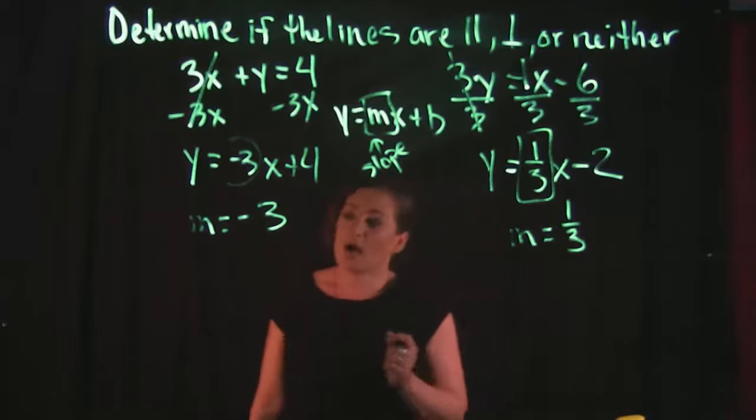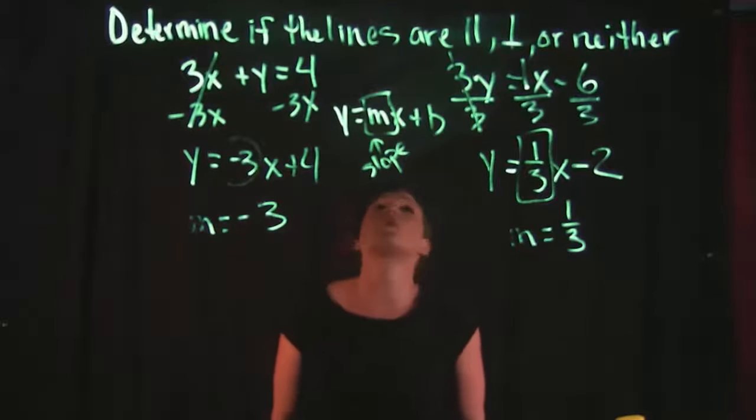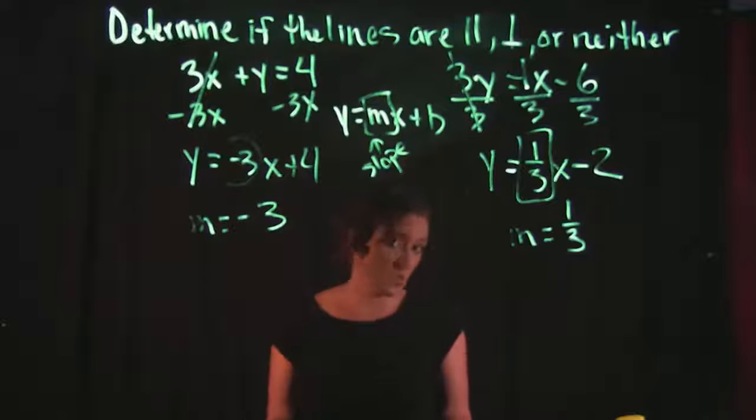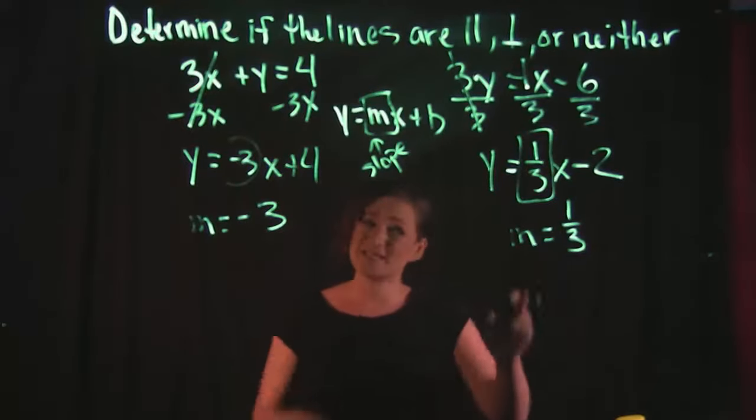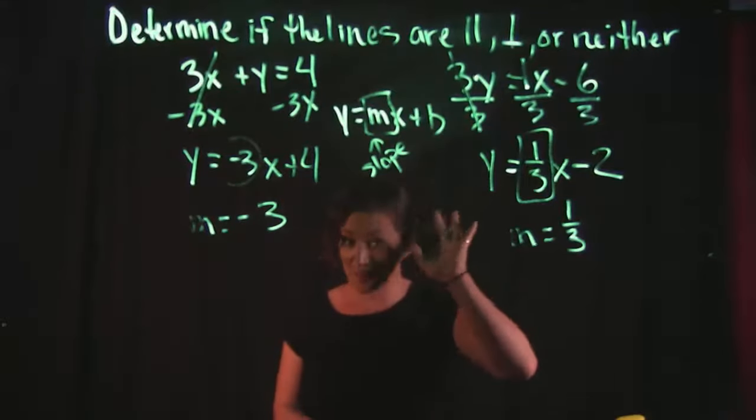So I have a slope of negative 3 and I have a slope of 1/3. The rules for parallel and perpendicular say this: they're parallel if they have the same slope, same exact slope. So here I have a negative 3, here I have a 1/3. Those are obviously not the same thing. So since they don't perfectly match up, they are not parallel.